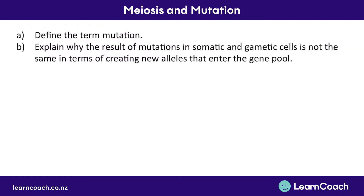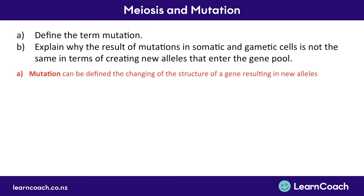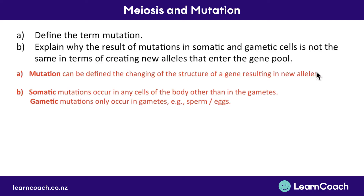Now let's move on to a question. This question asks us to define the term mutation, and explain why the results of mutations in somatic and gametic cells — our body and sex cells — aren't the same in terms of creating new alleles that enter the gene pool. First, let's define mutation: mutation is the changing of the structure of a gene that results in new alleles. Somatic mutations occur in any cells of the body that are not the gametes.